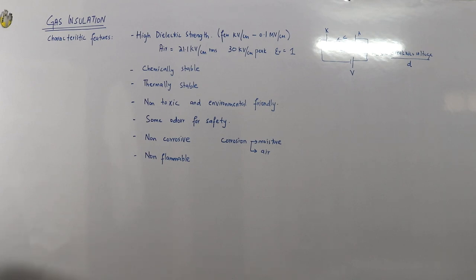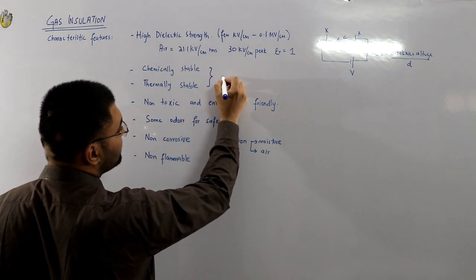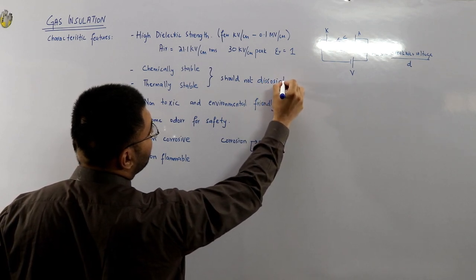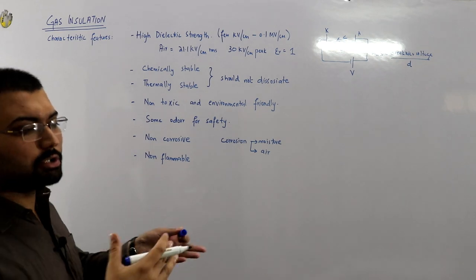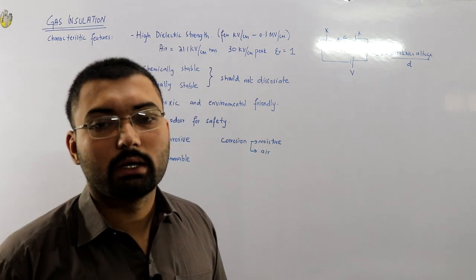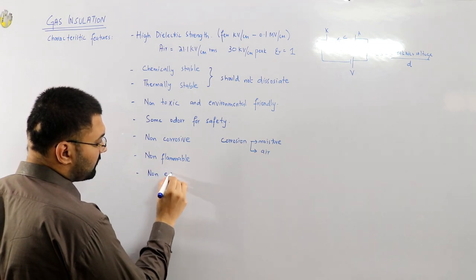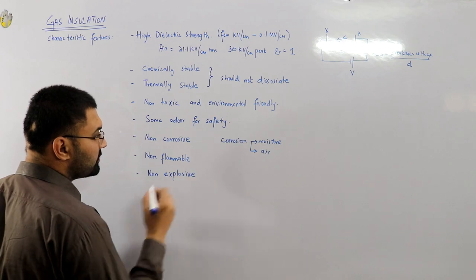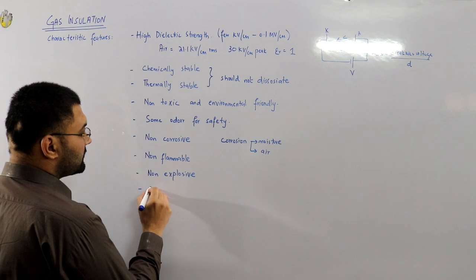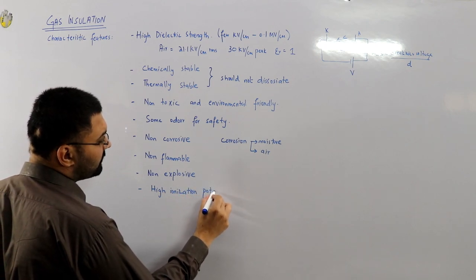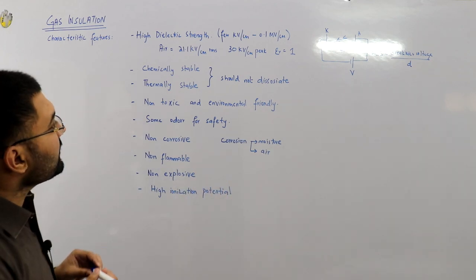Checking against the book: non-corrosive, chemically stable, does not dissociate — these are confirmed properties. Under chemical and thermal stability, we can add that the gas should not dissociate; in case of a molecular gas, it should not form new species. We can also add non-explosive — nitrogen, for example, is explosive and should not be used. Related to dielectric strength, the gas should also have a high ionization potential.